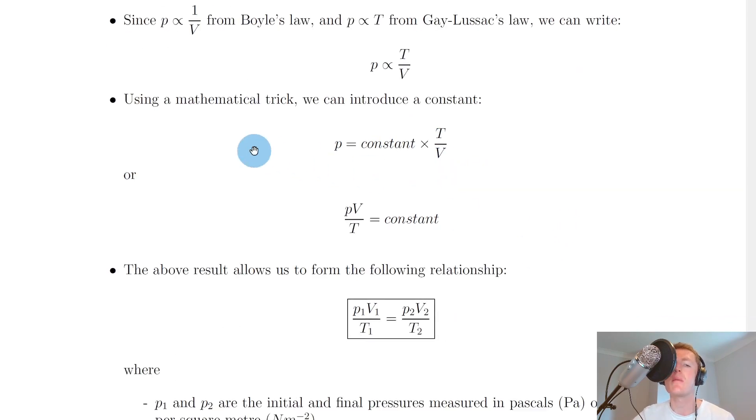And then using a mathematical trick we can introduce a constant on the right hand side. So to get rid of this proportional sign and replace it with an equal sign, we need to times this term on the right hand side by a constant. So we now have P equals a constant times T over V. Or to get the constant on its own on the right hand side, I'm going to multiply both sides by V to get this over here,